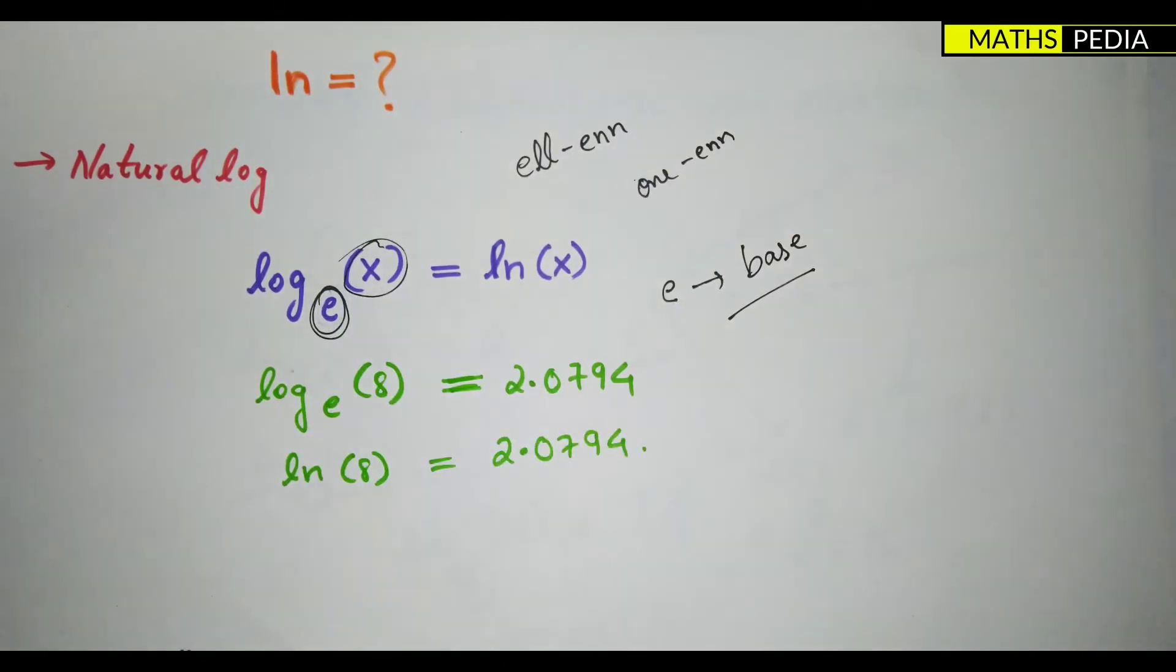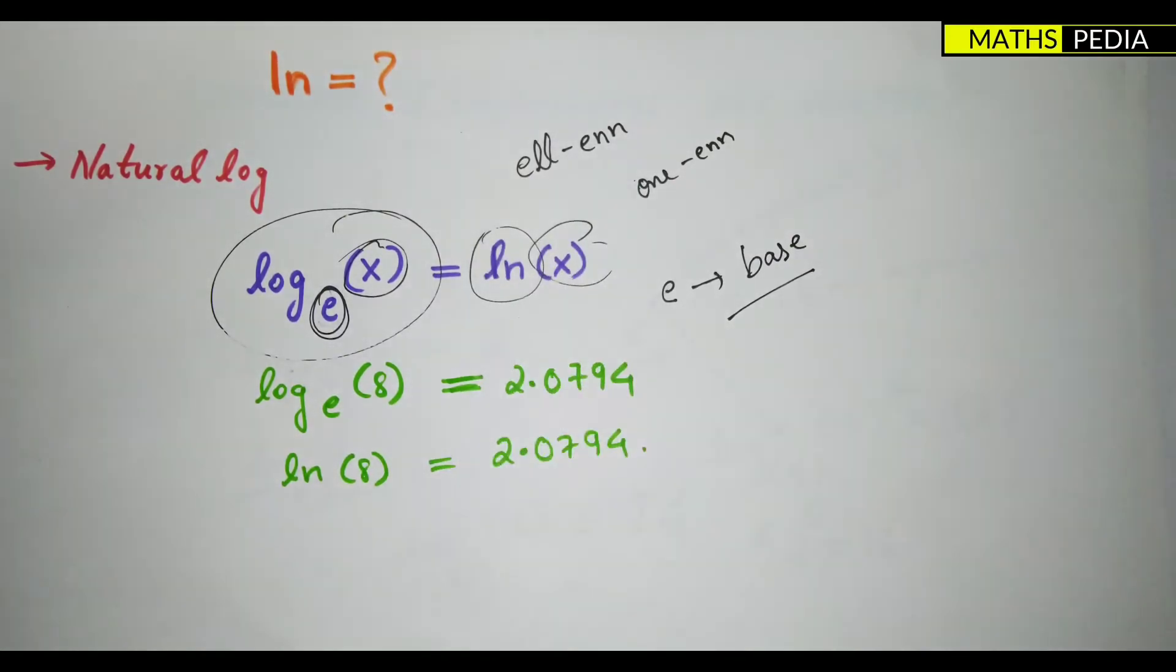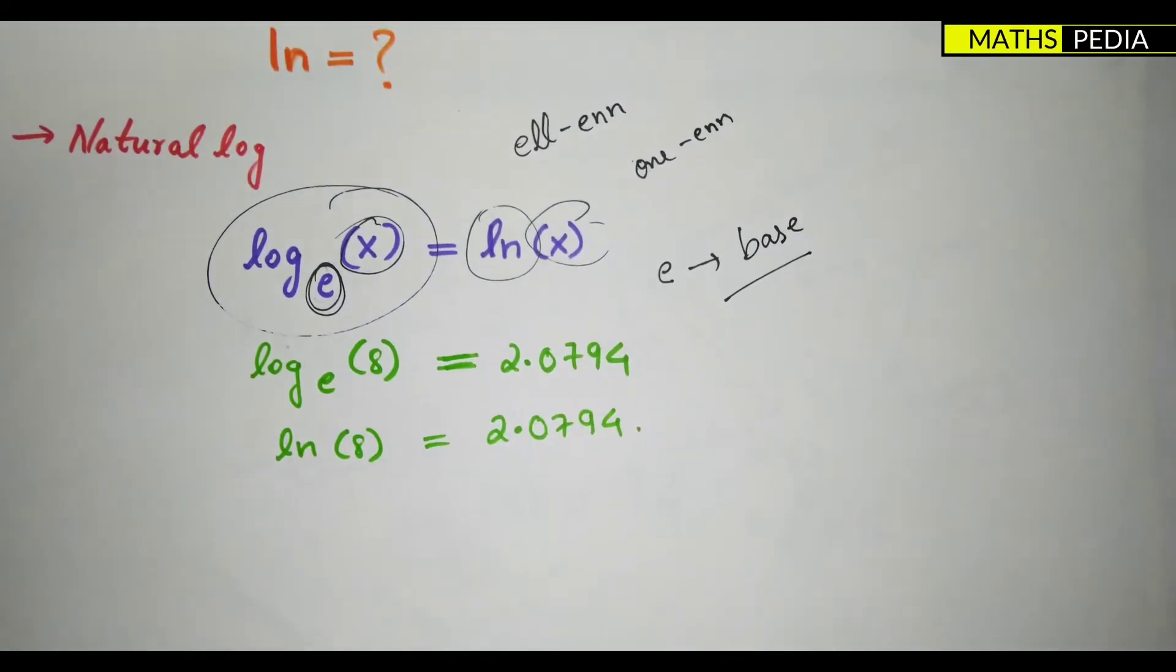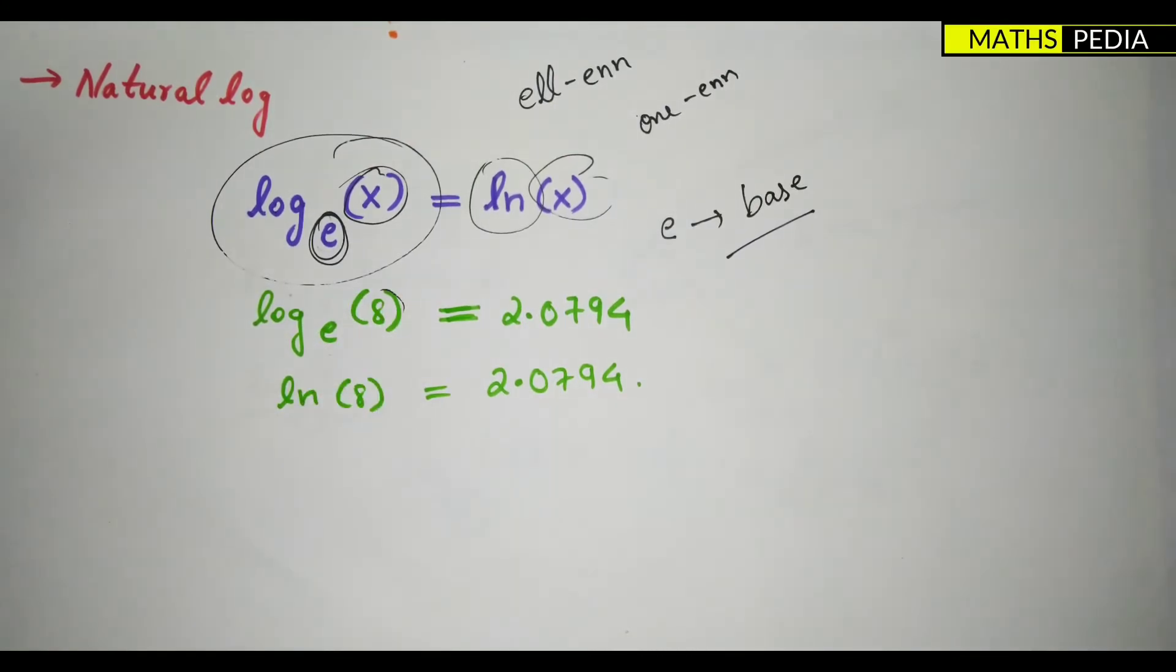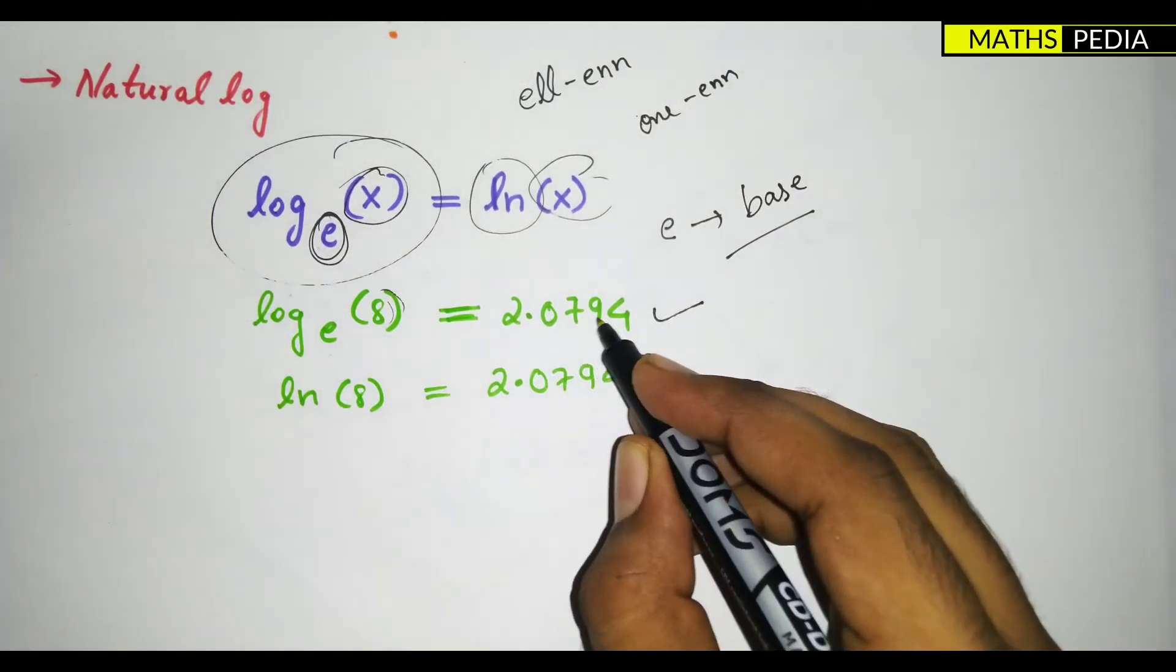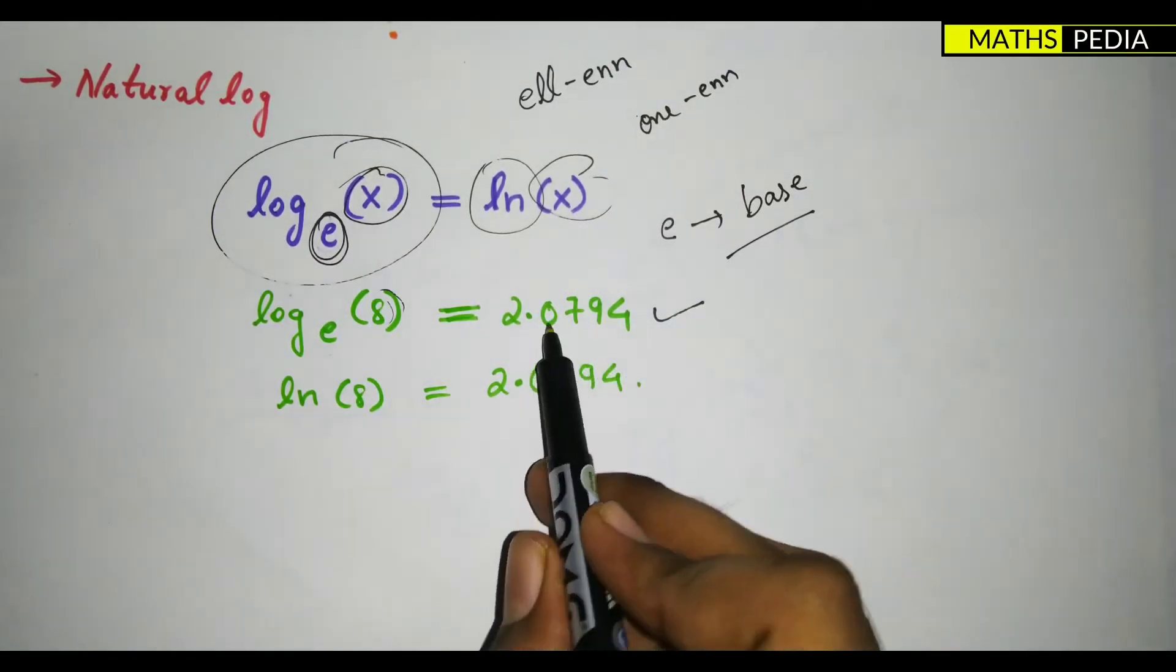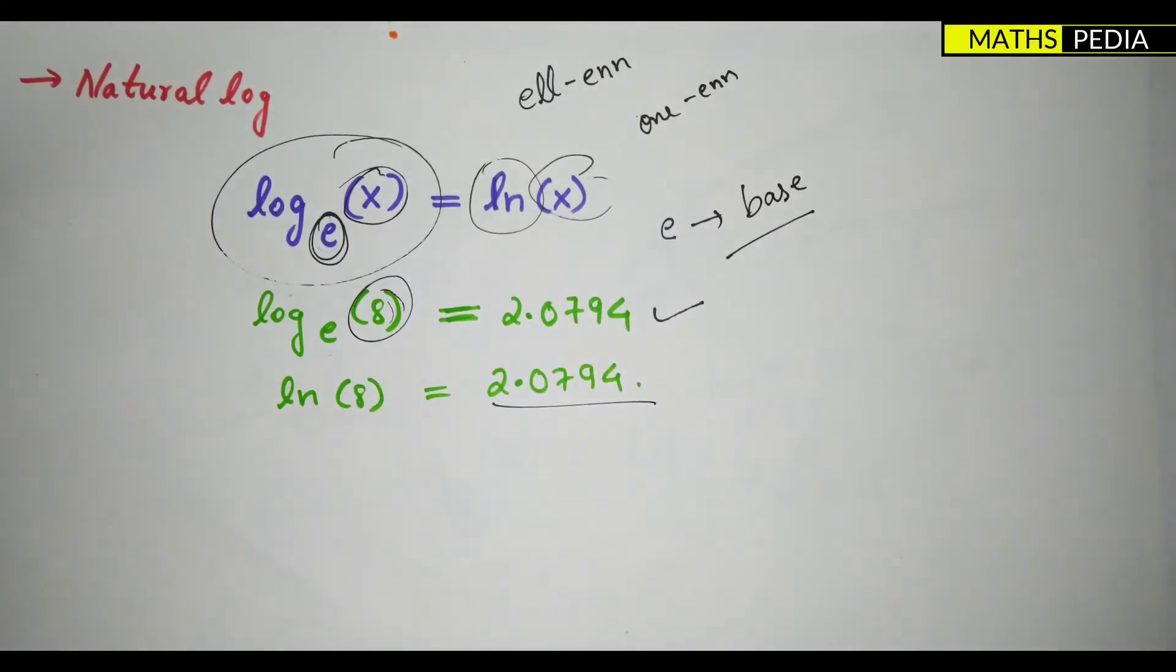We'll take one example, it's better to understand. So log base e of 8, log base e of 8 gives me the value as 2.0794. Whenever I take ln of 8, I'll get the same answer. So this is how the difference comes.